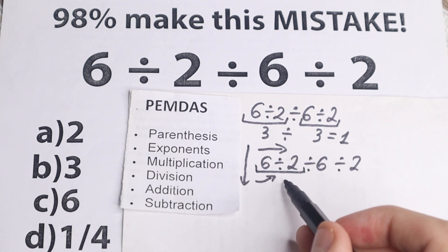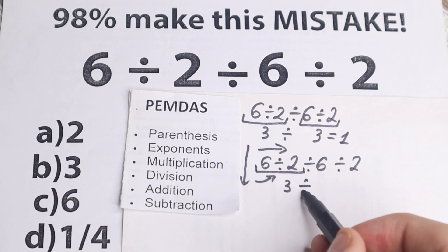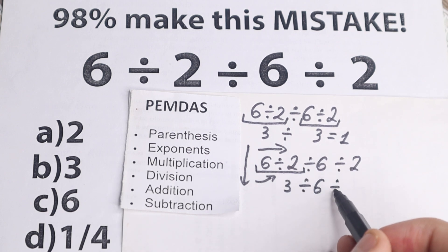Okay, 6 divided by 2 equal to 3, and we just need to write this expression in the end. We still have this expression: 3 divided by 6 divided by 2.